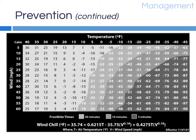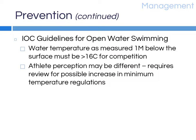Similar to the wet bulb globe thermometer used in hot environments, a wind chill chart is used in cold environments to estimate actual cold exposure based on temperature and wind speed. The International Olympic Committee requires water temperature for open water swimming to be measured one meter below the surface and to be at or above 16°C for competition. However, athlete perception varies, and some events at 16°C have been perceived as too cold, with athletes experiencing cold injuries — suggesting this standard may require future review and modification.